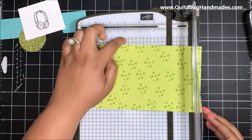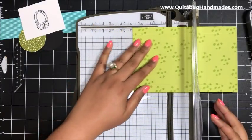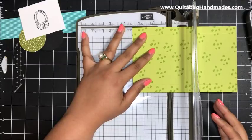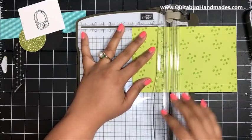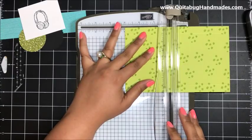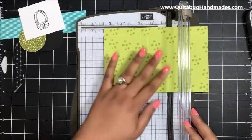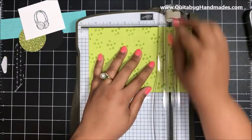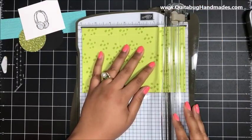Then with the long side, the seven inch side across the top, I'm going to score at two and a half inches, three inches, five and a half inches, and six inches.